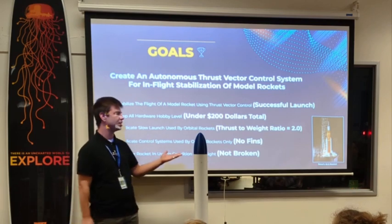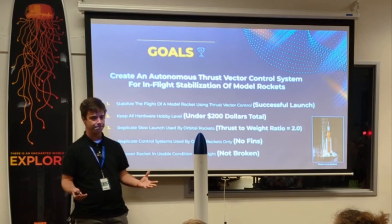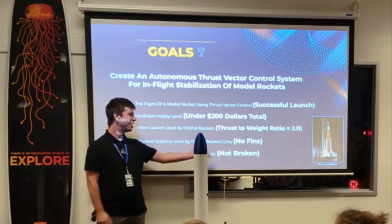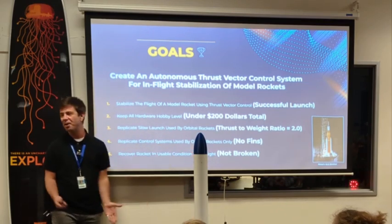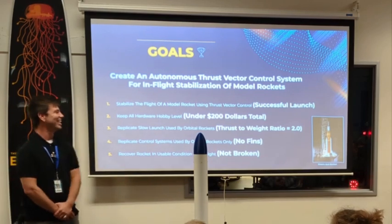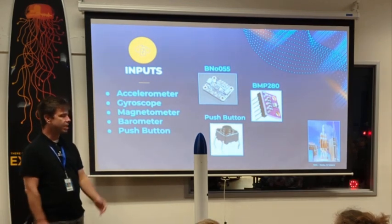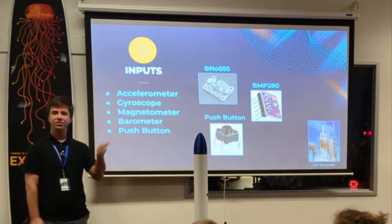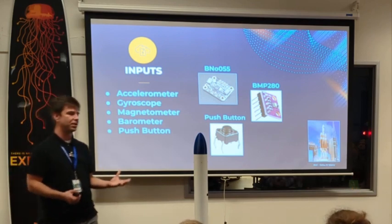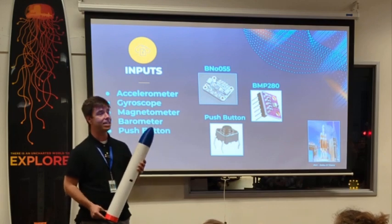In order for passive stabilization fins to work, you have to launch at 30 feet per second, which is not what actual rockets do. And of course I wanted to recover it, not broken. So I set out to design that system, and just like any good mechatronic system, it has a series of inputs. The inputs I needed were necessary in order to understand the orientation of the rocket at any given time.